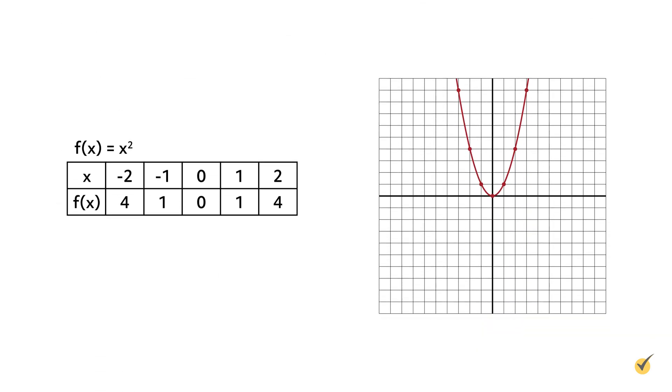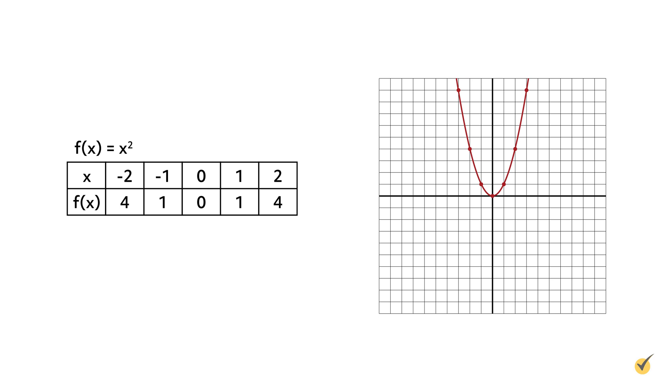Now let's take a look at the graph for the function f equals x squared. This function is quadratic because its graph forms a u-shape, called a parabola. The x-axis represents the input, x, and the y-axis represents the output, x squared. Manipulating a function is the process of altering its equation to move the graph's position on the coordinate plane. There are lots of ways to manipulate functions. Let's start by discussing translations.